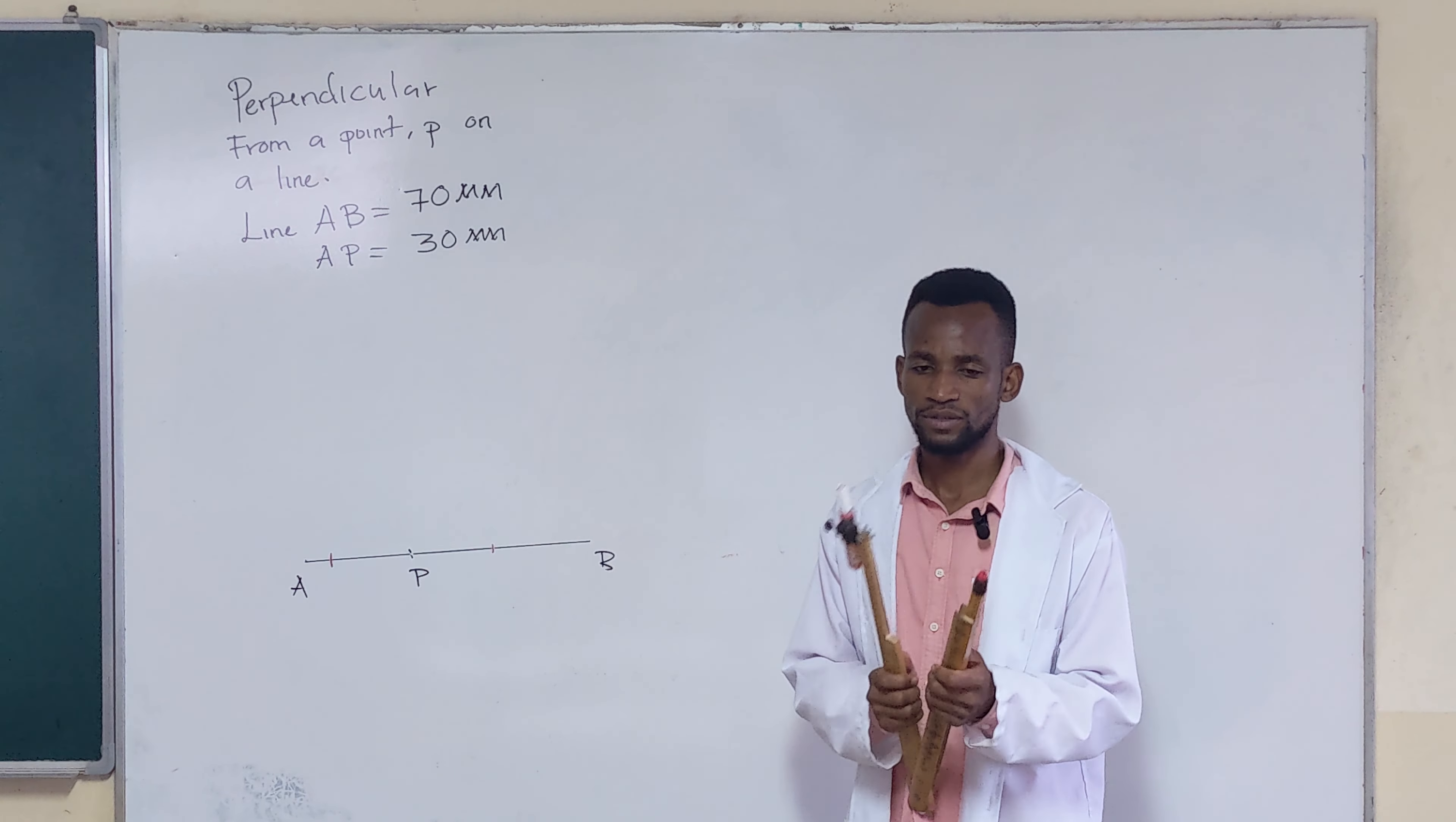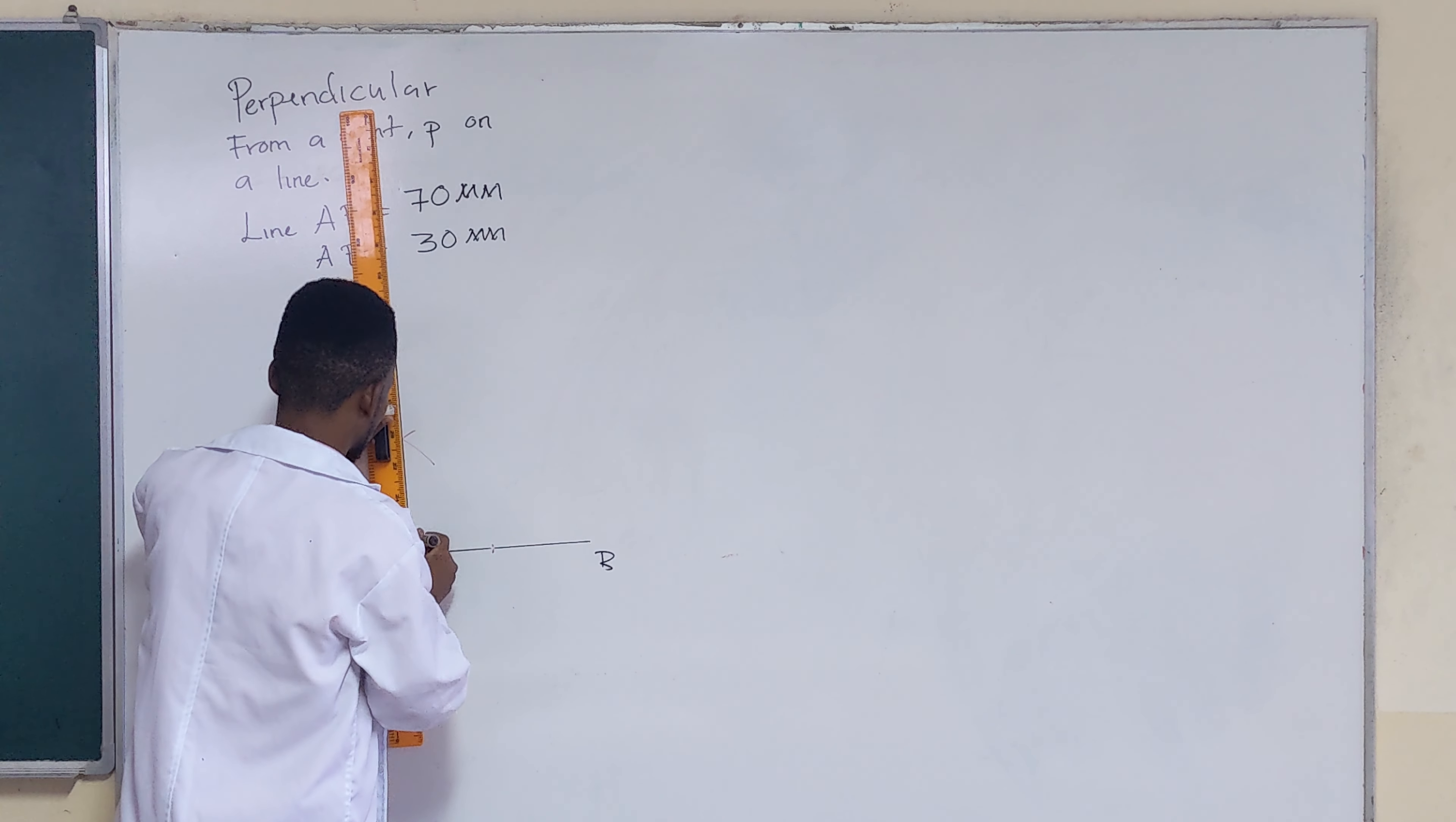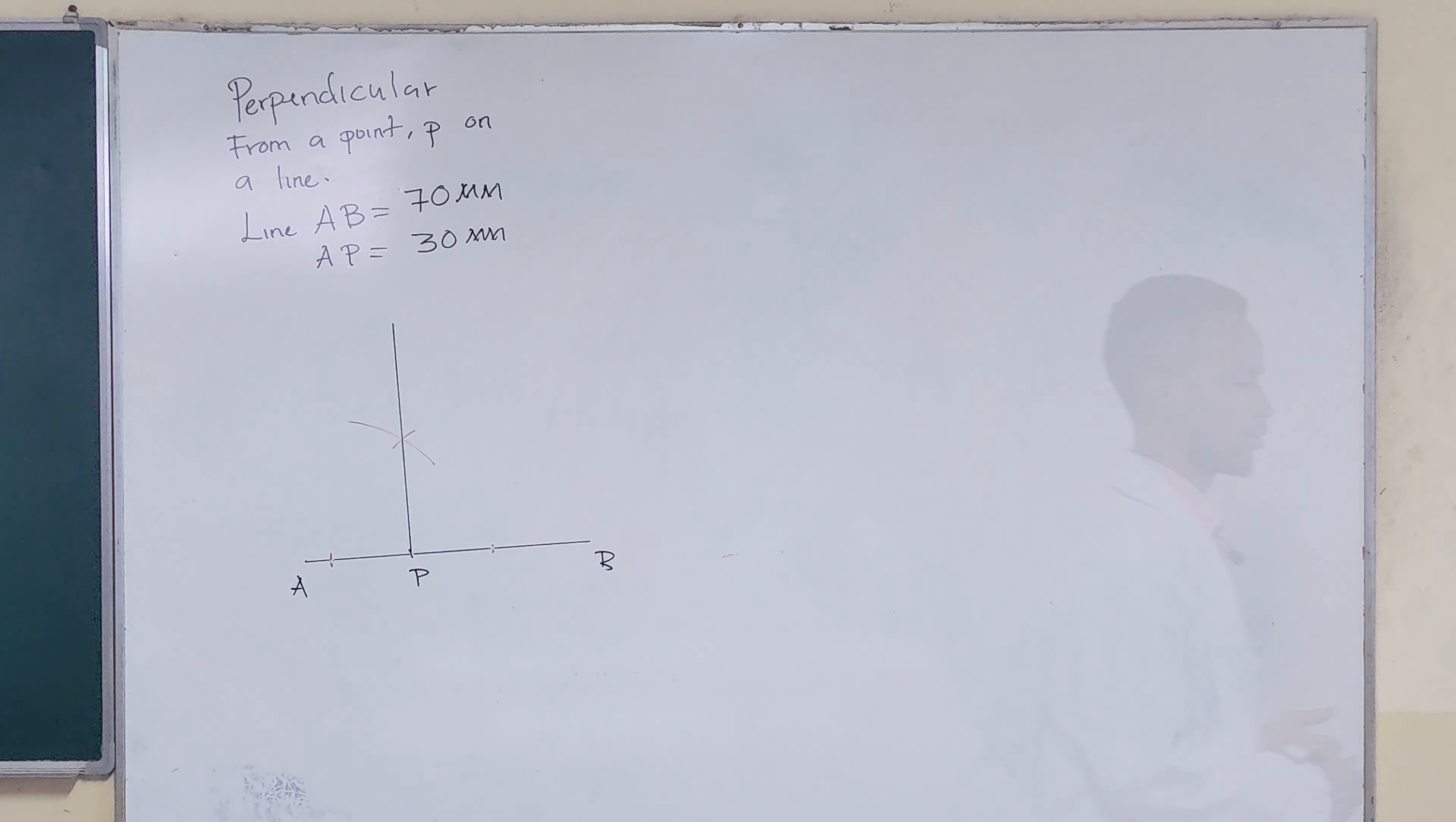And then you connect point P to the point of intersection of the arcs. So you connect point P to the point of intersection there. So when you measure the angle there, it should give you 90 degrees.